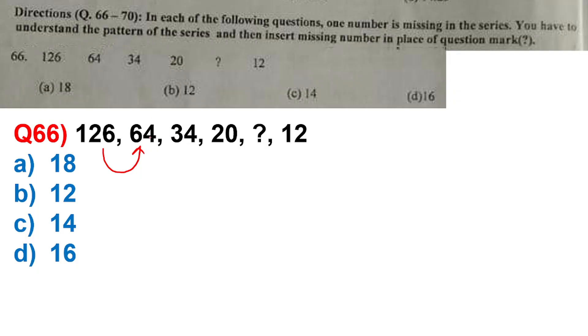Question 66: 126, 64, 34, 20, question mark, 12. 126 divided by 2 is 63, and 63 plus 1 is 64. 64 half is 32, and 32 plus 2, after that 34 half is 17, and 17 plus 3 is 20. So we have a pattern: divided by 2 and plus 1, divided by 2 plus 2, divided by 2 plus 3, and after that divided by 2 and plus 4. So 20 divided by 2 is 10, and 10 plus 4, so 10 plus 4 will be 14.